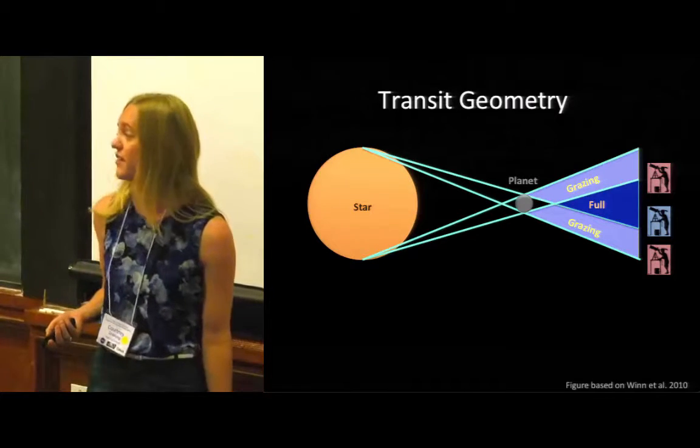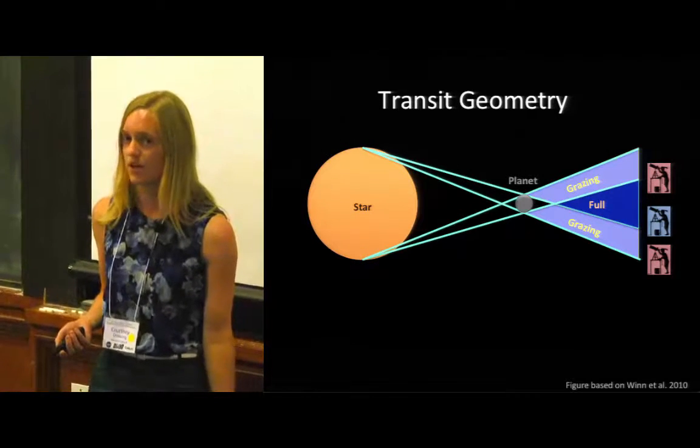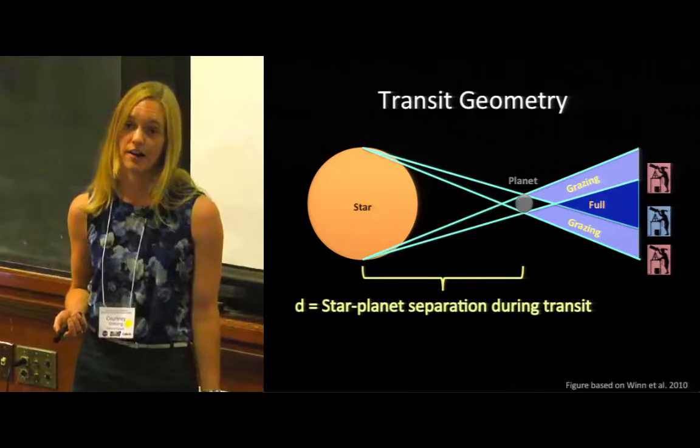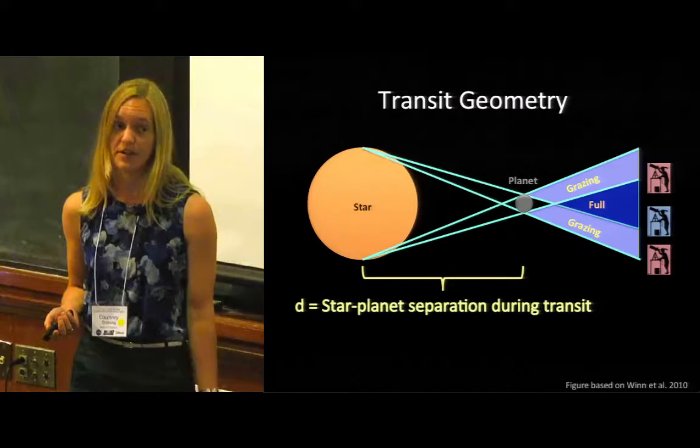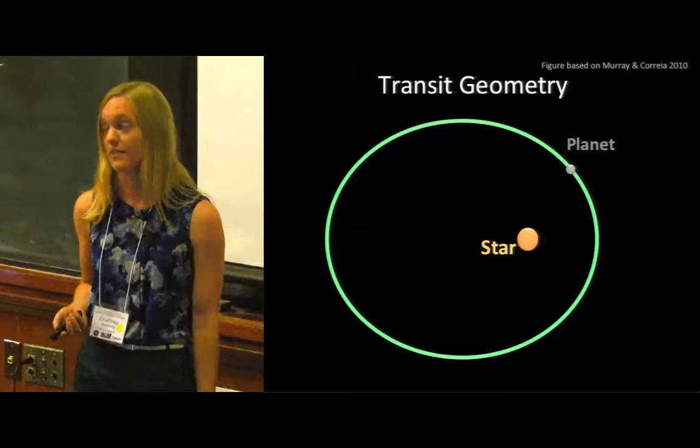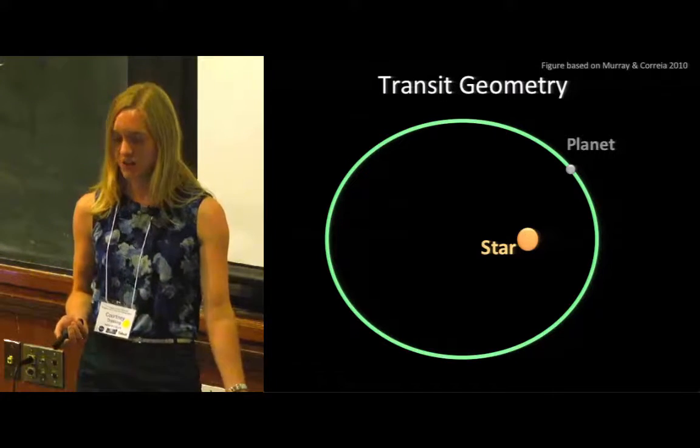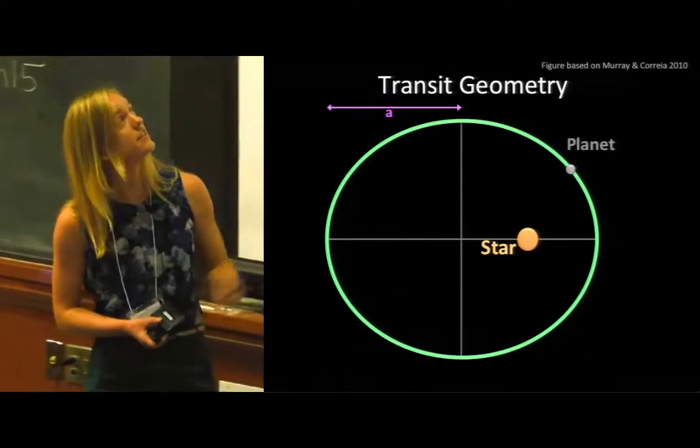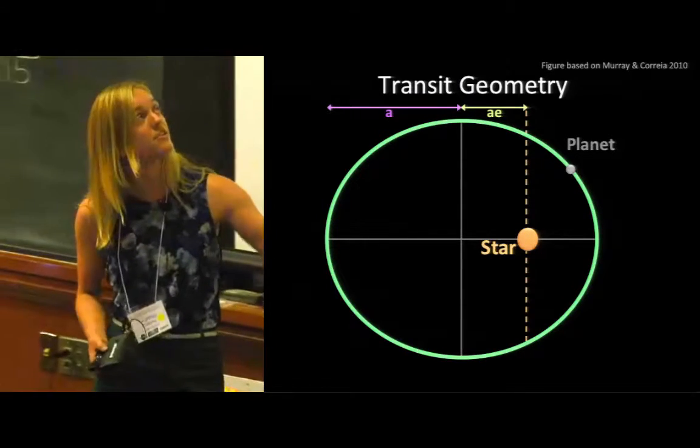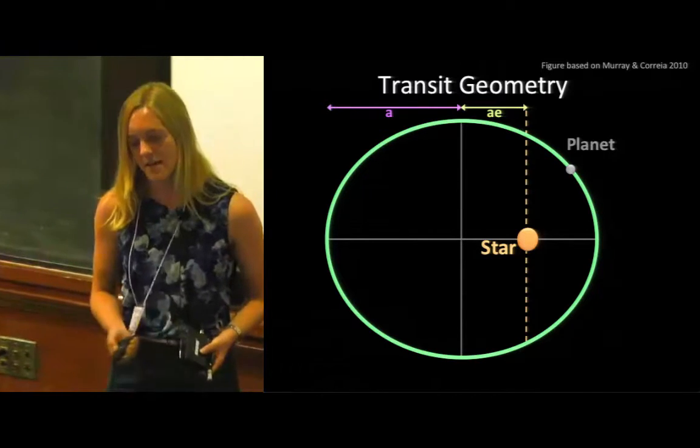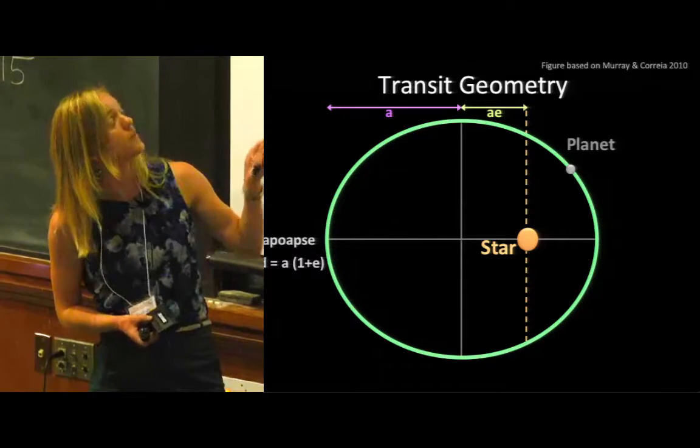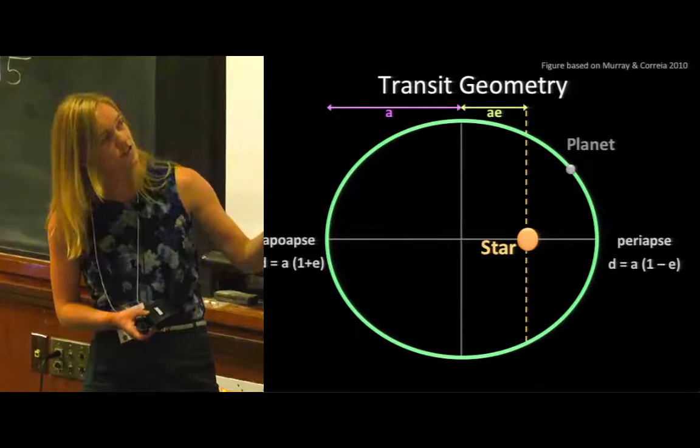One of the things we need to determine in order to figure out whether we'll see a full event or a grazing event or just no transit at all is how far away the planet is from the star at any given time. So we're going to do some quick geometry. We're going to start off with our planet in an elliptical orbit around the star and we've learned in our geometry classes and astronomy courses that this distance here is just the semi-major axis and that the offset of the star from the center is just a times e. And then we can define the apoapsis and periapsis as when the planet is farthest away or when the planet is closest to the star.